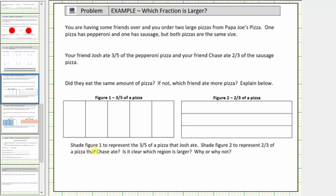We're asked to first shade figure one to represent the three-fifths of a pizza that Josh ate, and then shade figure two to represent two-thirds of a pizza that Chase ate. Is it clear which region is larger? Why or why not?